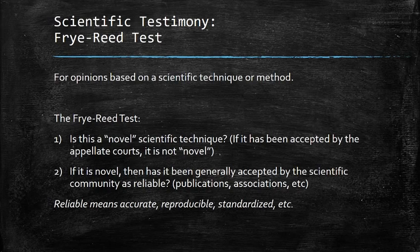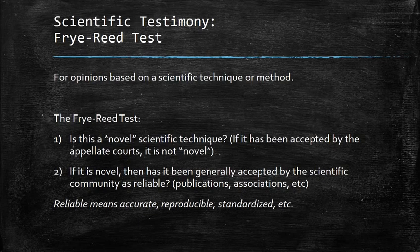Because digital forensics is based on a scientific technique or method, the Frye-Reed test comes into play. The Frye-Reed test is used in Maryland for scientific techniques. The first question is: is this a novel scientific technique? 'Novel' means has this technique been accepted by the appellate courts before? If it is novel, the question becomes has it been generally accepted by the scientific community as reliable? The scientific community is assessed through publications, associations, and things like that. Reliable means: is it accurate, is it reproducible, has it been standardized, etc.?